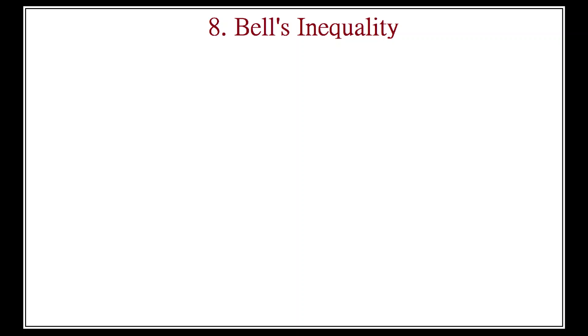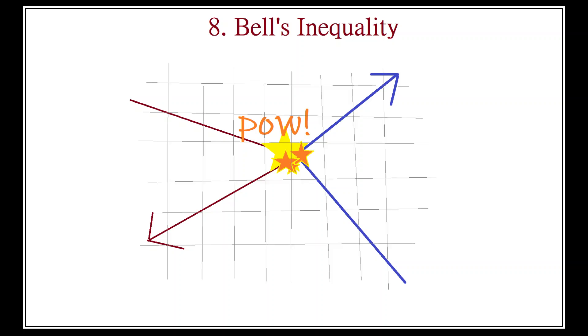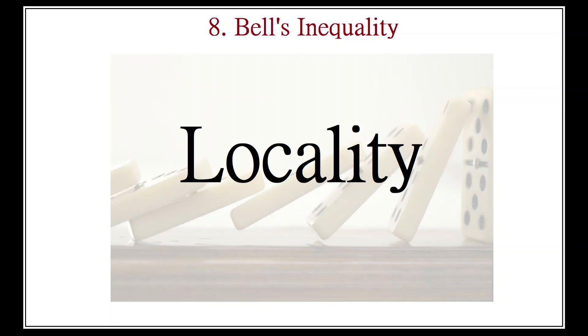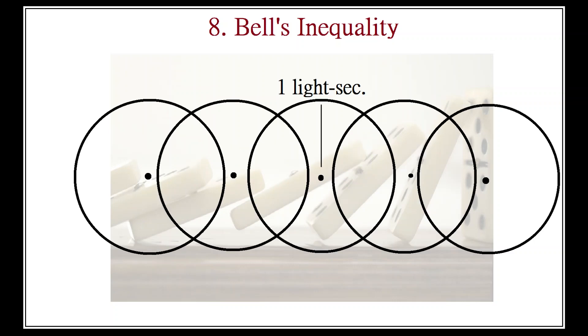Einstein, Podolsky, and Rosen make an important assumption in their argument, namely that things can only affect each other by intersecting in space and time. All causality is touching. This assumption is called locality. Things must share the same locality in order to affect each other, and the boundaries of this locale are determined by the speed of light.